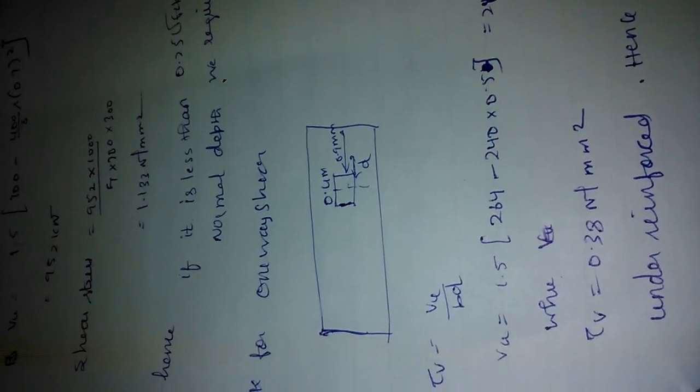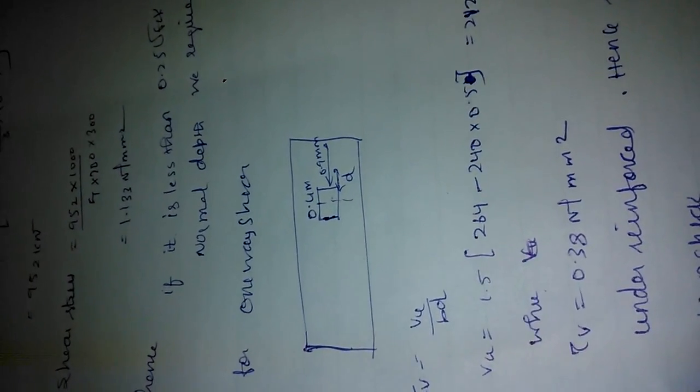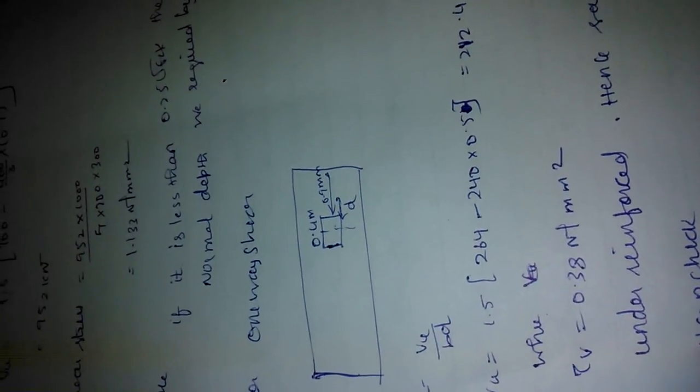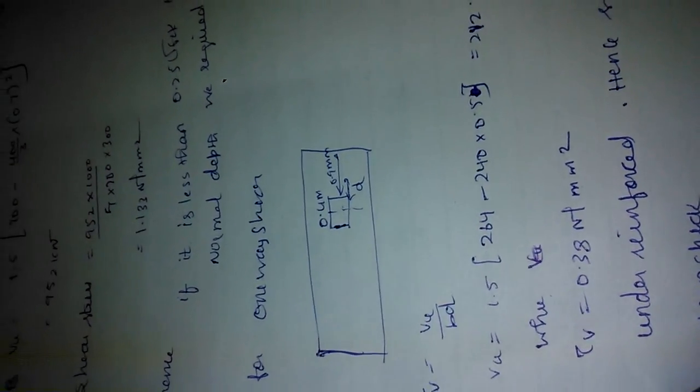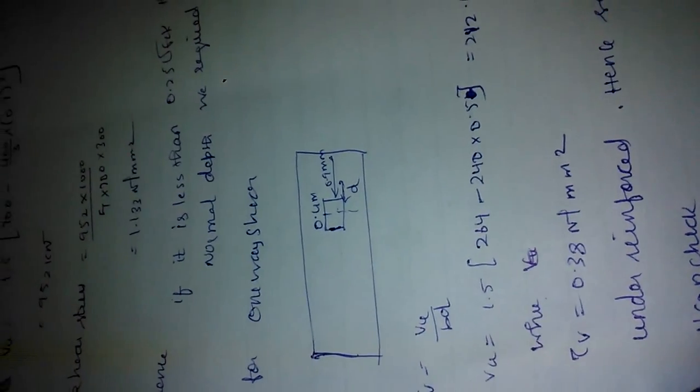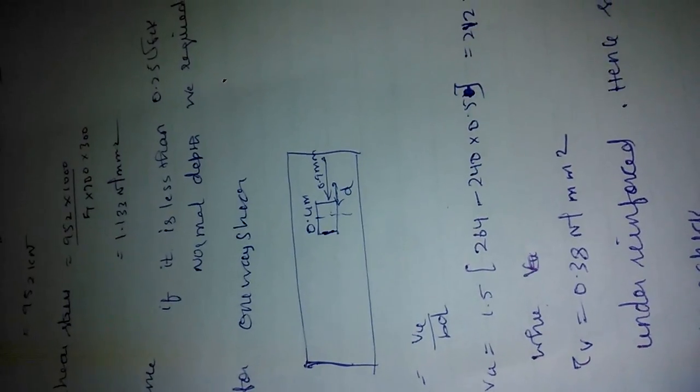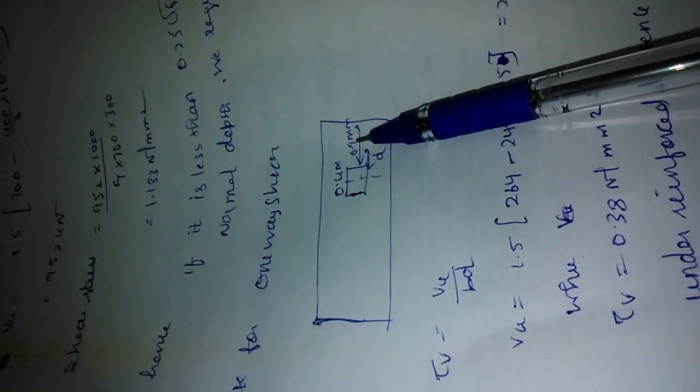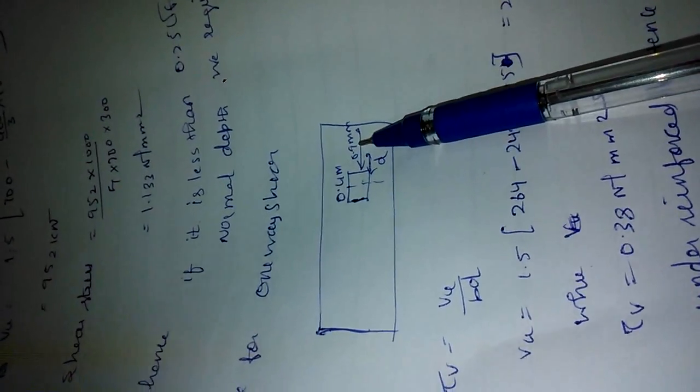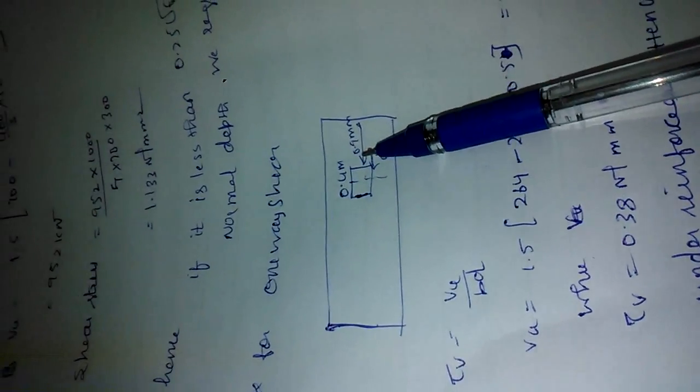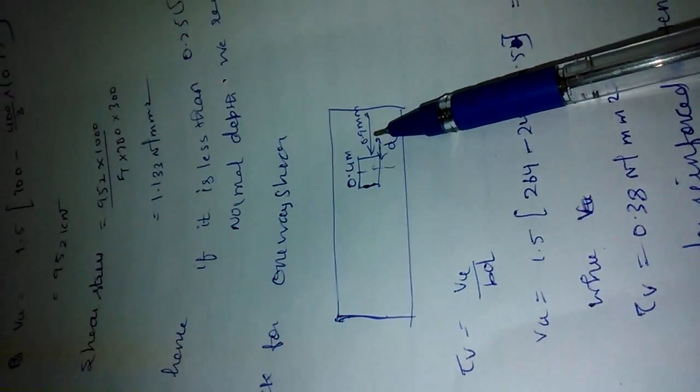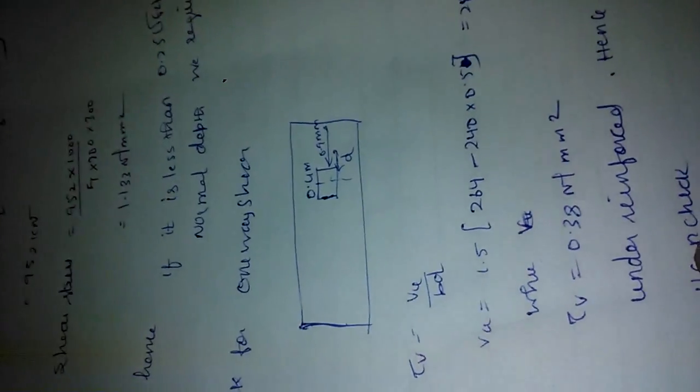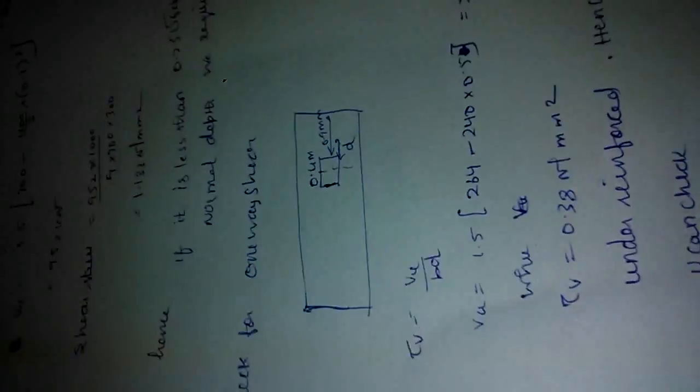1.5 into load is the shear force acting. Minus SBC into area. That area is from the center of the column plus 0.3, the depth. We have to minus the SBC because we want the area beyond 0.3. That is from here to here only we need to find the V value. This is how we designed this one-way shear. V value divided by BD after getting the tau-v is less than tau-c and that is okay. So check for development length.